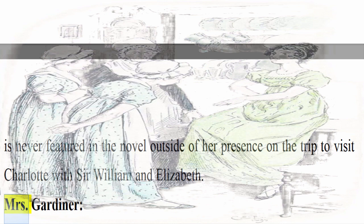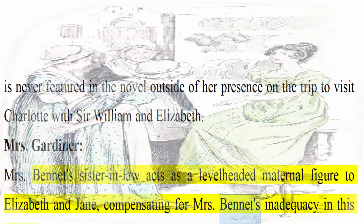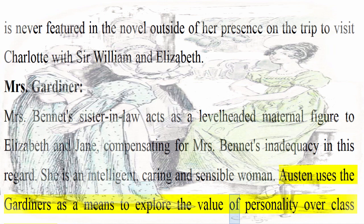Mrs. Gardiner: Mrs. Bennet's sister-in-law acts as a level-headed maternal figure to Elizabeth and Jane, compensating for Mrs. Bennet's inadequacy in this regard. She is an intelligent, caring, and sensible woman. Austen uses the Gardiners as a means to explore the value of personality over class distinction.